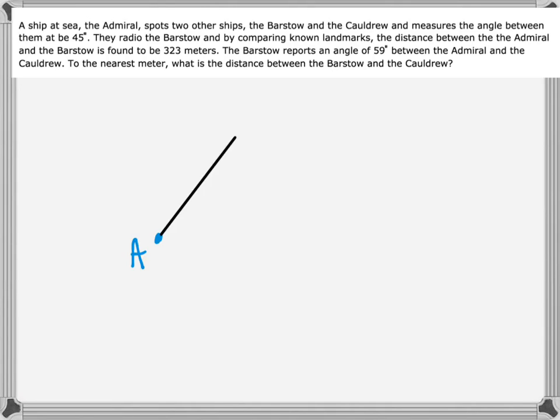So we have a picture that looks like this. Here's the Admiral, the Barstow, and the Cauldrew. Ship A then calls Barstow, and by making use of some known landmarks, they're able to somehow figure out the distance between them is 323 meters.